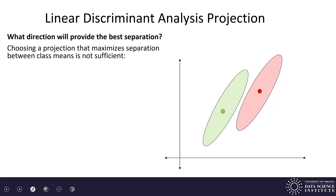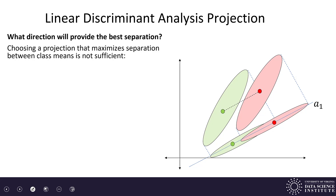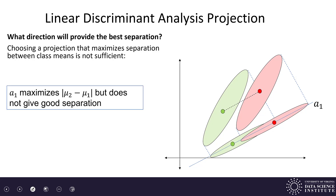The first thought you might have is to project in the direction that maximizes separation between the means. There's the line connecting the means, and projecting onto that line maximizes the separation between the means after projection. But this is what that would look like — line a1 is parallel to the line between the means, and after projecting onto it, my classes are now overlapping. I've projected them in a way that doesn't give good class separation.